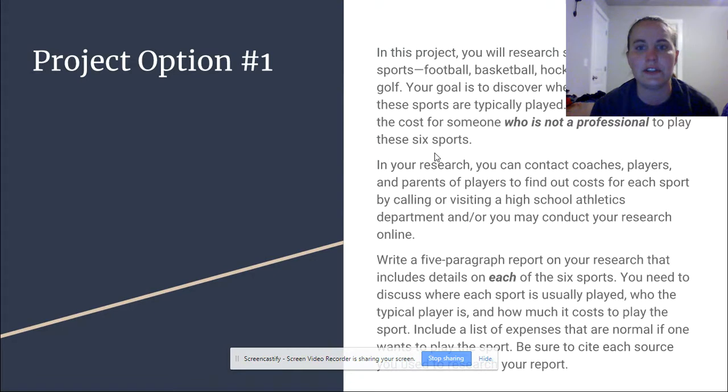So here's your first option. This is the option that's in Flip Switch. On this project, you will research several major sports: football, basketball, hockey, skiing, tennis, and golf. Your goal is to discover where and by whom these sports are typically played. Also, find out what is the cost for someone who is not a professional to play these sports. In your research, you can contact coaches, players, and parents of players to find out costs for each sport by calling or visiting a high school athletic department, or you may conduct research online.